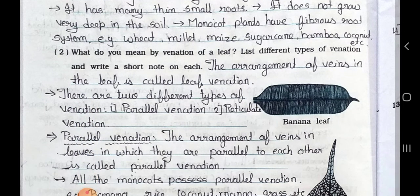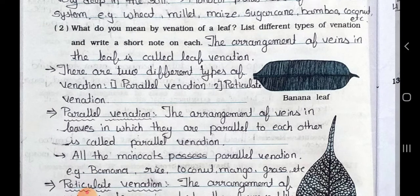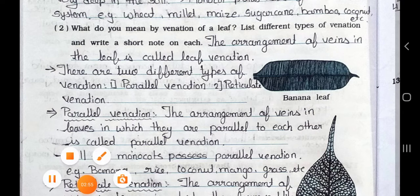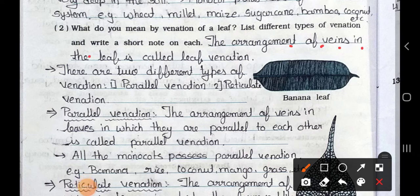Now see the question number 2. What do you mean by the venation of a leaf? List different types of venations and write a short note on each. Answer is, the arrangement of veins in the leaf is called leaf venation. There are two different types of venations. Number 1, parallel venation and number 2, reticulate venation.